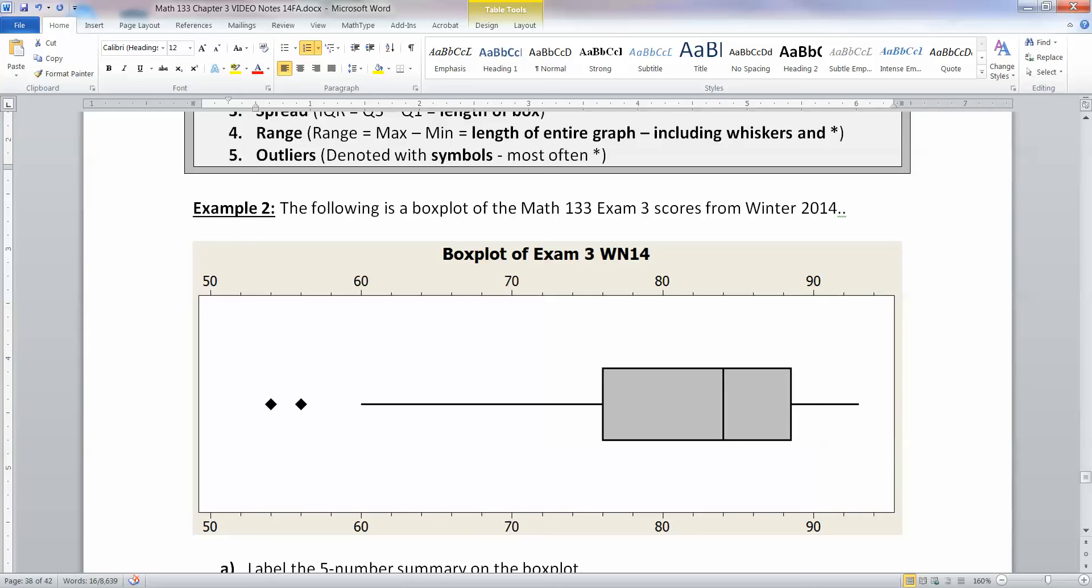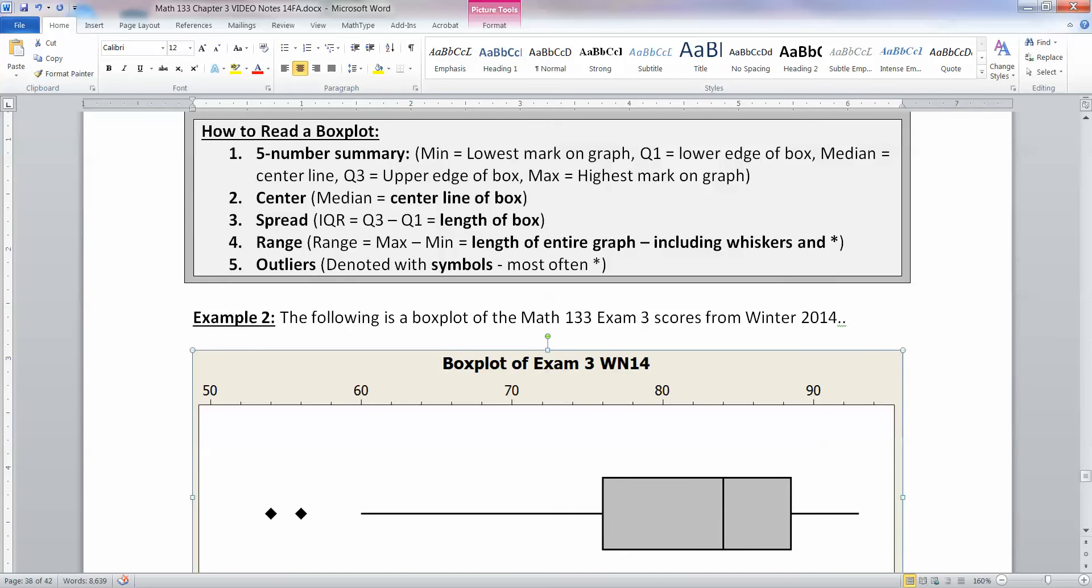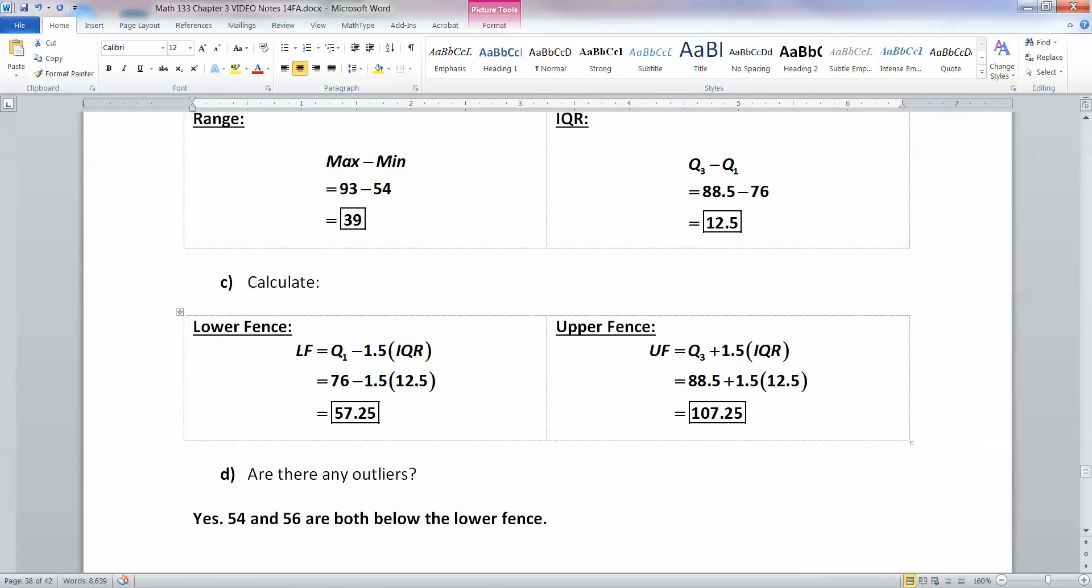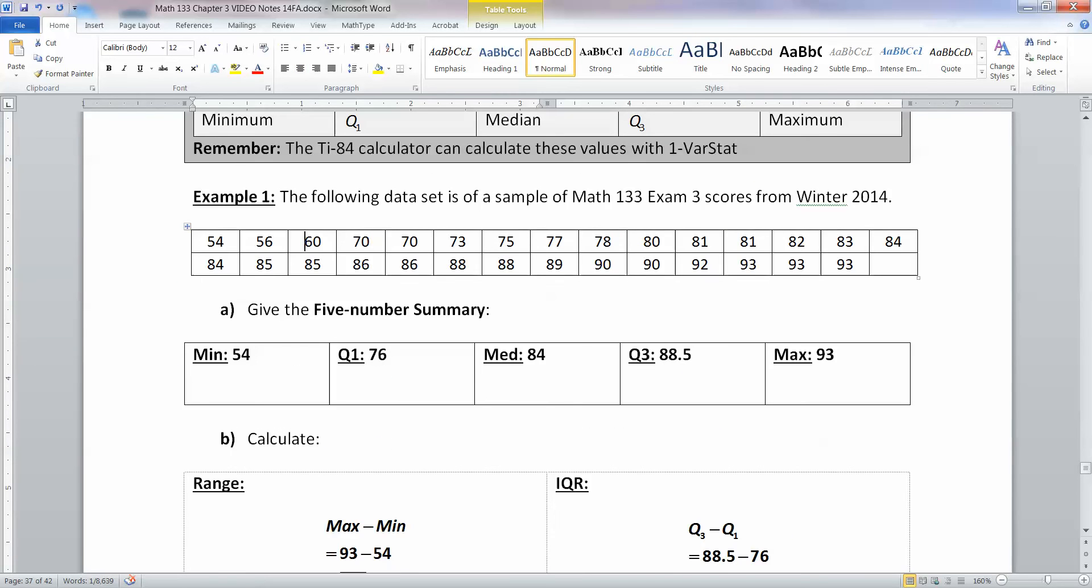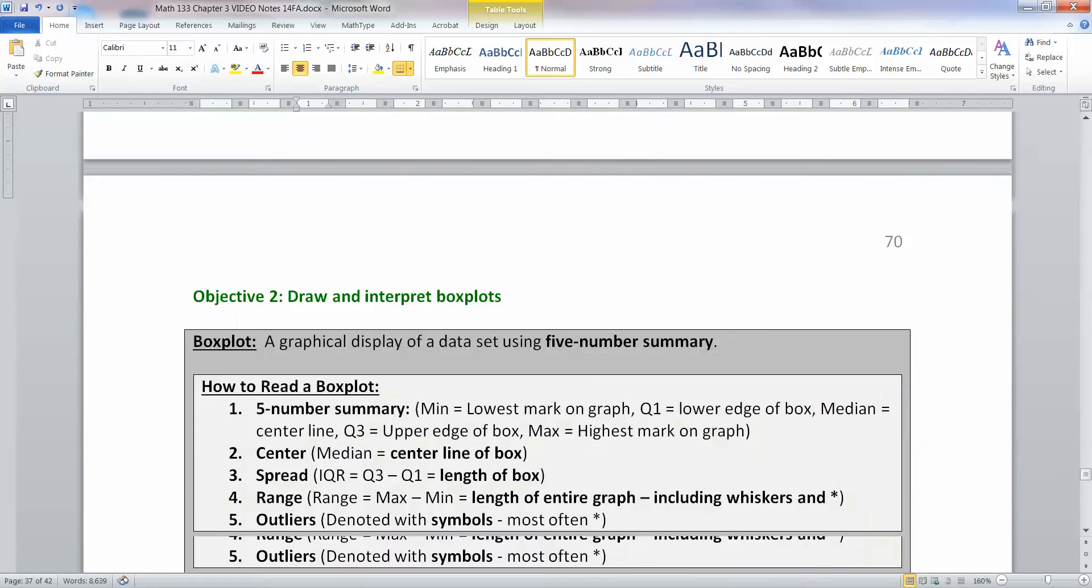Then you have your maximum over here at 93. And you have your minimum over here at this little dot thing, and that's 54. And notice 54 and 56 are right there because they're outliers. And then what you do is you make the whisker go to anything that's above your lower fence. So these two are outliers, so they're out. So then you go to the next score that's above your lower fence. Our lower fence was at 57. So I go back to the data set, and I look for the next number, and it's 60. So the whisker has to go to 60.